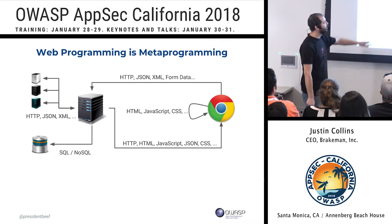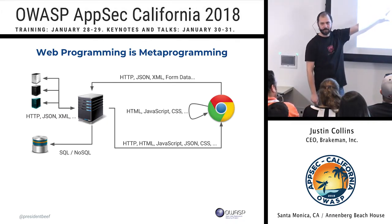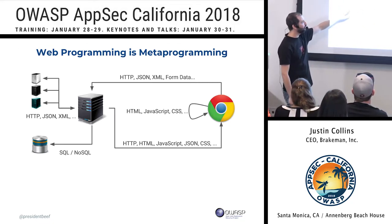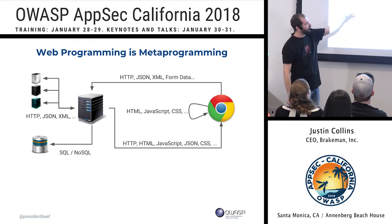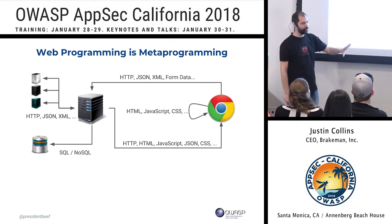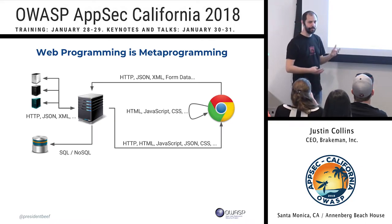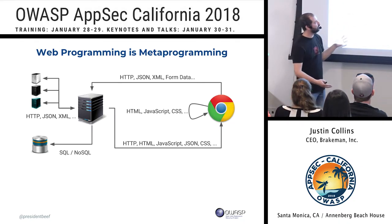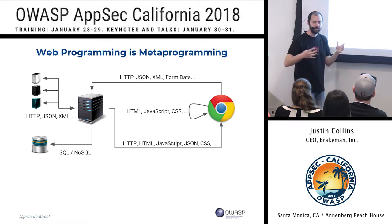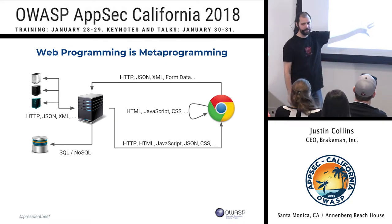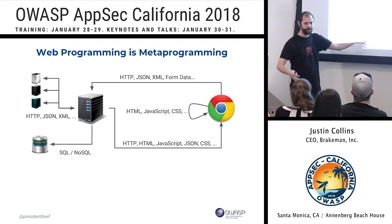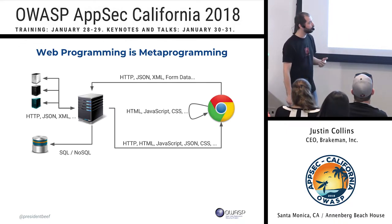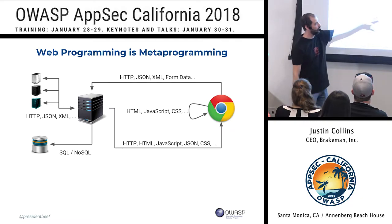If we look at that web application on the web server, it has to take in stuff from a browser — an HTTP request, with opportunities for injection: JSON, XML, form data, query parameters. Maybe it's talking to back-end microservices or a database. Then from all of that it has to generate an HTTP response with HTML, JavaScript, maybe JSON and CSS. It's essentially taking this input and generating code that's going to be interpreted in the browser.